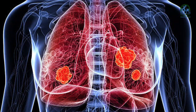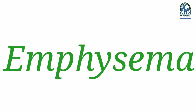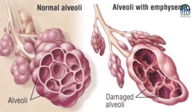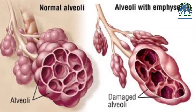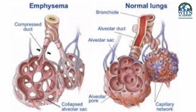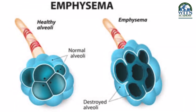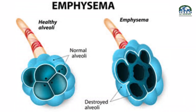Emphysema lungs ki ek condition hoti hai. Is mein alveoli ki deewarein bahut patli aur kamzor ho jaati hain. Emphysema mein alveoli toot jaate hain aur lungs mein ek bada space chhod dete hain, jis ki wajah se saans lena bahut zyada mushkil ho jata hai. Emphysema bahut zyada smoking ki wajah se hota hai.